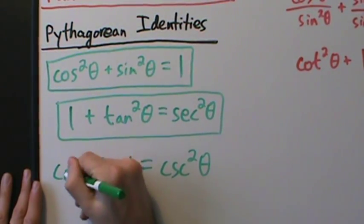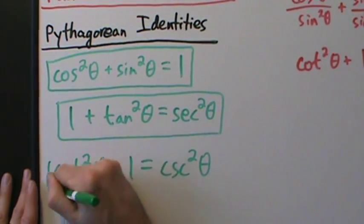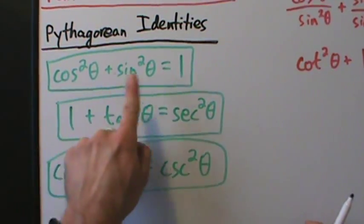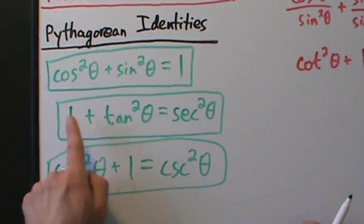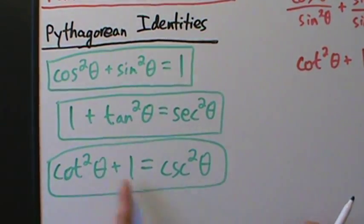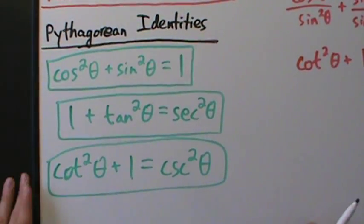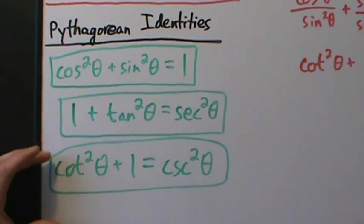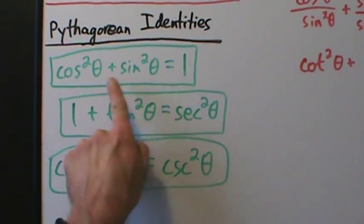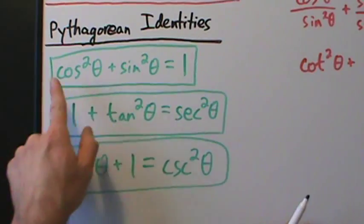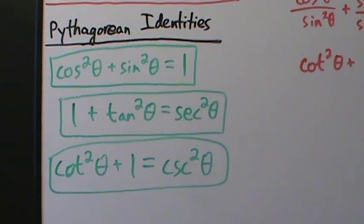So our third Pythagorean identity is cot²θ + 1 = csc²θ. Remember: start with the first identity cos²θ + sin²θ = 1, divide both sides by cos²θ to get the second identity 1 + tan²θ = sec²θ, and divide both sides by sin²θ to get the third identity cot²θ + 1 = csc²θ. That's it for the Pythagorean identities — they're all extremely important, especially the first one, which is one of the most important identities in all of math.